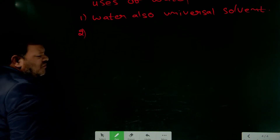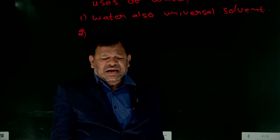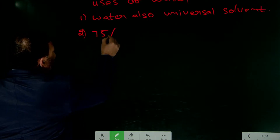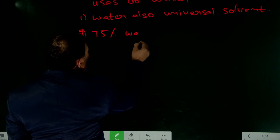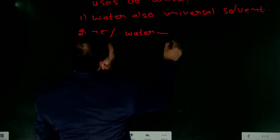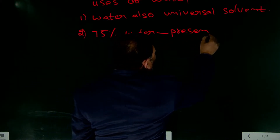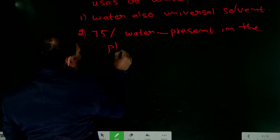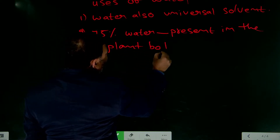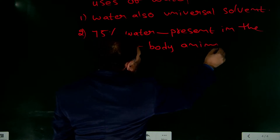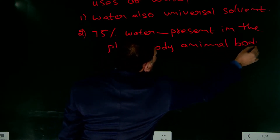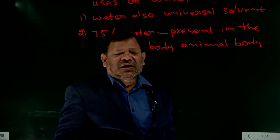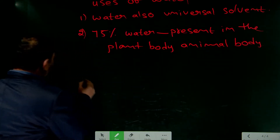In plants and animals, 75% of the body is occupied by water. So 75% of the water is present in living organisms.